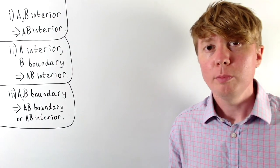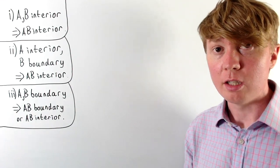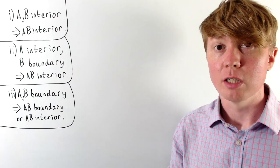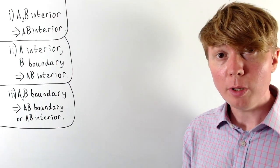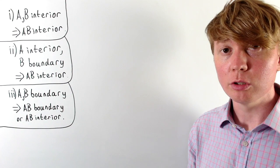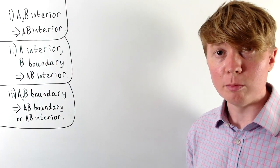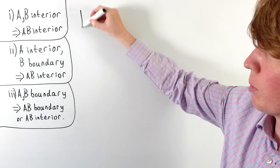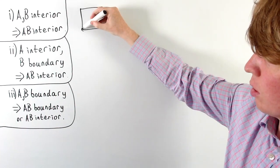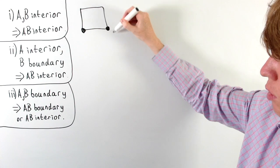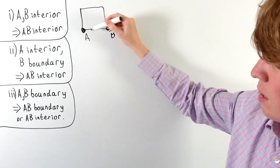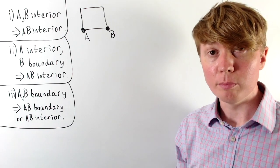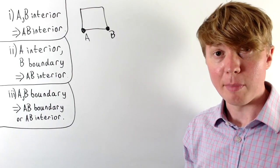Our final case: A and B are both boundary points which belong to the convex set. There are two possible outcomes. First, all points on the line segment between A and B are boundary points — if A and B lie on a straight section of the boundary, then the line segment between them lies on the boundary, and every point between A and B is a boundary point.